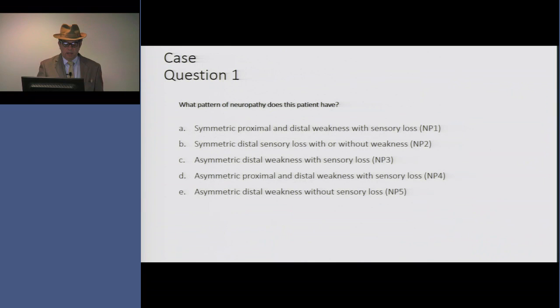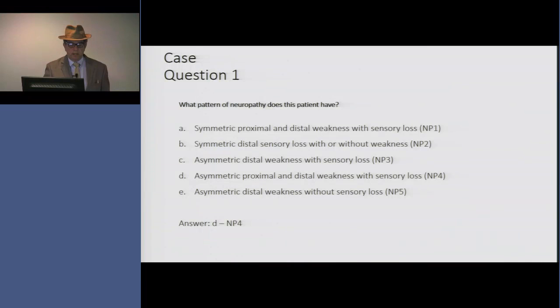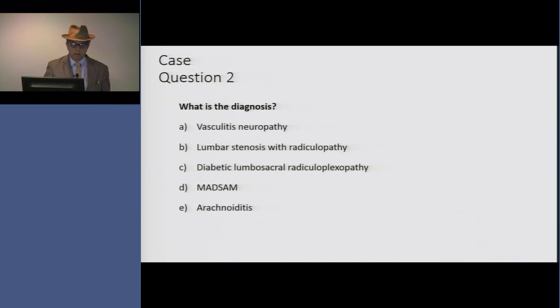So what pattern is this? We've talked before about the 10 classic neuropathic patterns, and this patient had asymmetric proximal and distal weakness with sensory loss — the MP4 pattern — and this is the pattern of a lesion in multiple roots or plexus.